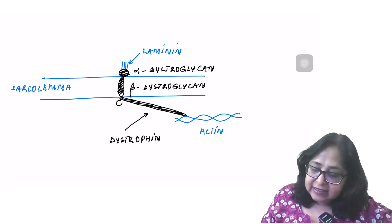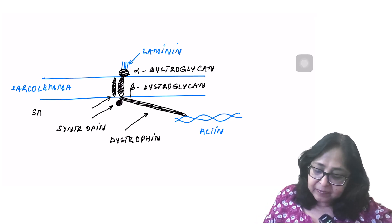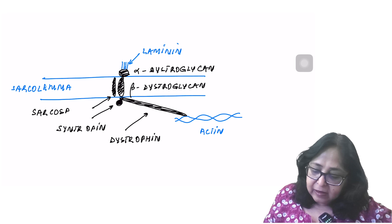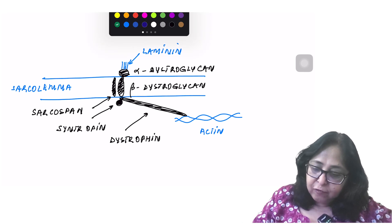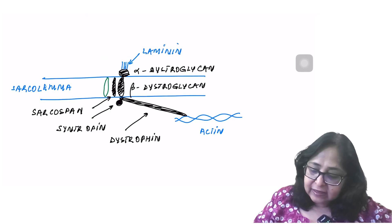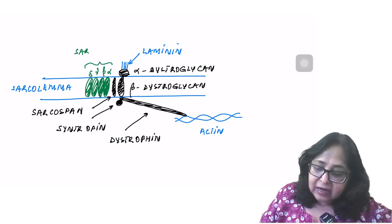Another protein, sarcolemma protein, which is called syntropin. It is a globular protein. One more which is called sarcospasm. And then there are four more proteins, which is alpha, beta, gamma, delta, sarcoglycan.